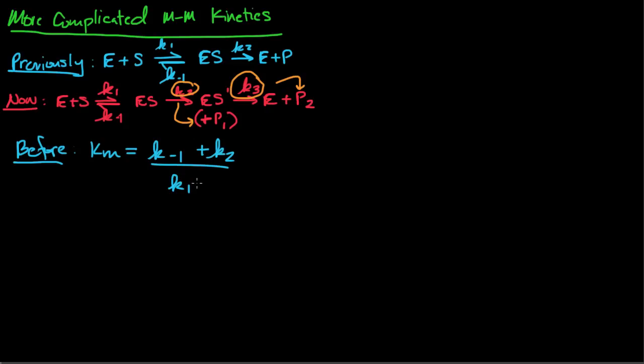We had Vmax equal to K2 times enzyme total, because we assumed that K2 was the rate determining step. The basic form of the Michaelis-Menten equation was V equals Vmax times substrate concentration divided by Km plus substrate concentration.